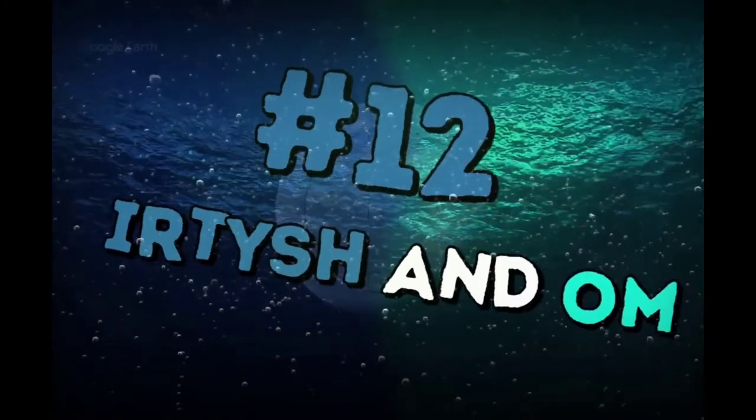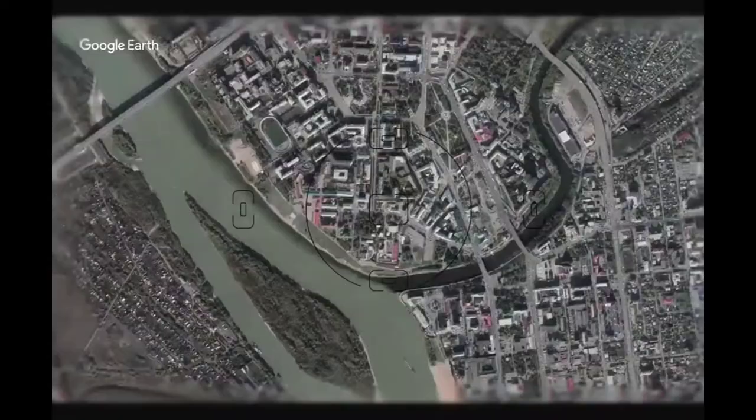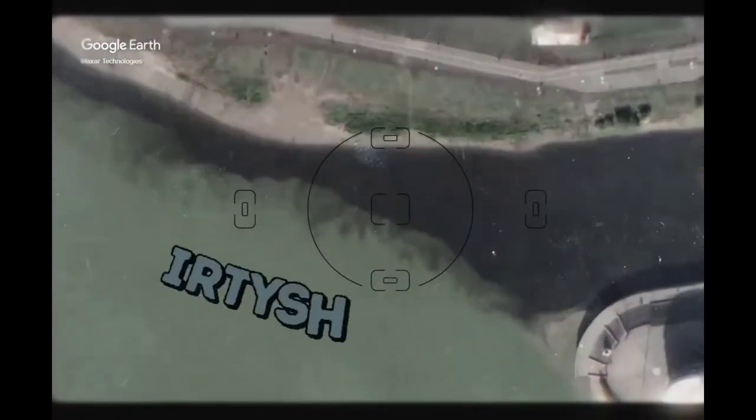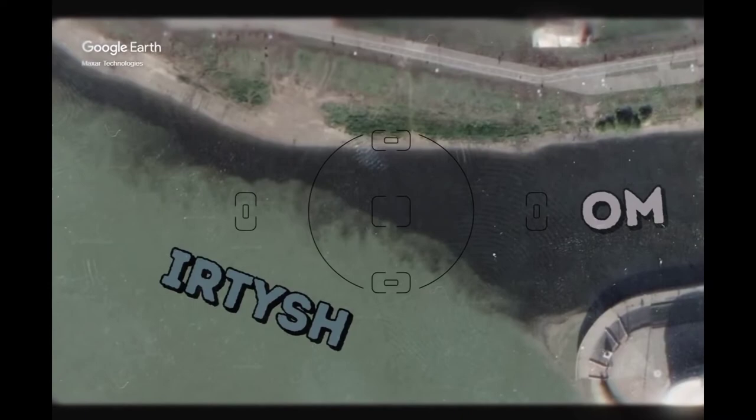Irtysh and Ulm flow into each other in Ulmsk, Russia. The Irtysh is cloudy and the Ulm, pure and transparent.